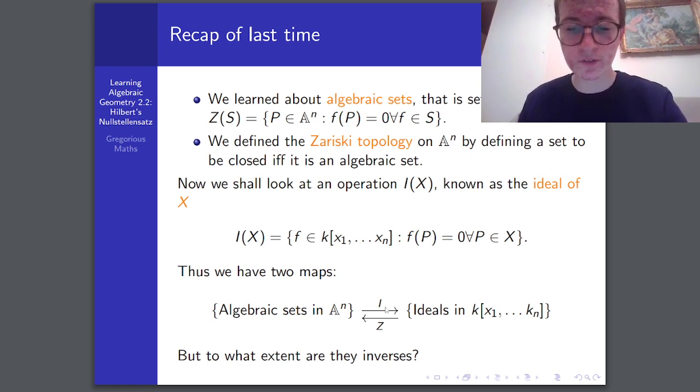So, we have two maps. The ideal of x, the construction here, this goes from algebraic sets in affine n-space and sends it to ideals in the polynomial ring here. And the algebraic sets that we learned about last time, they do the opposite. But to what extent are they actually inverses? For example, if I do i of z of some subset x, will I just get x back? That is what Hilbert's Nullstellensatz answers.